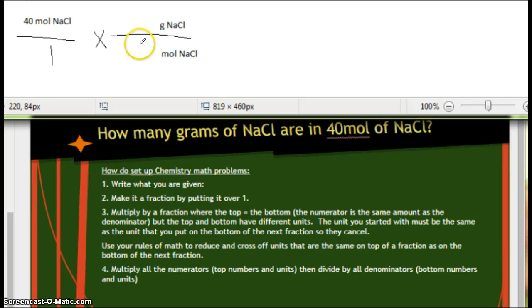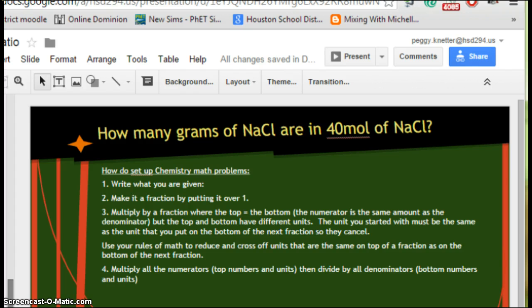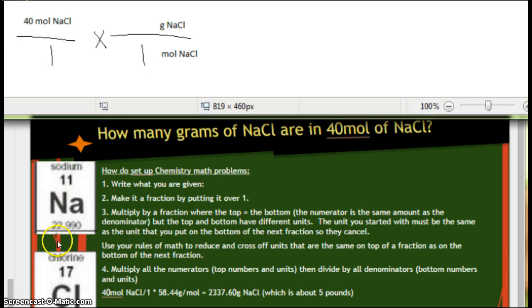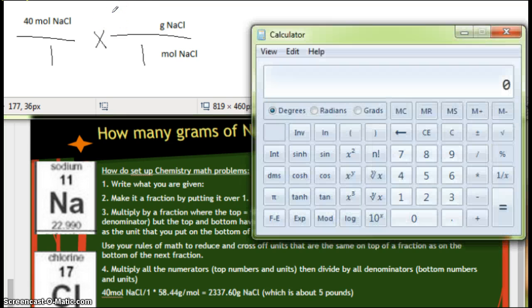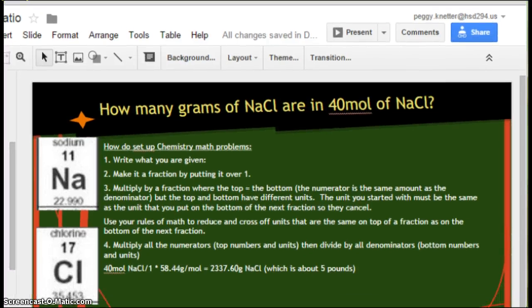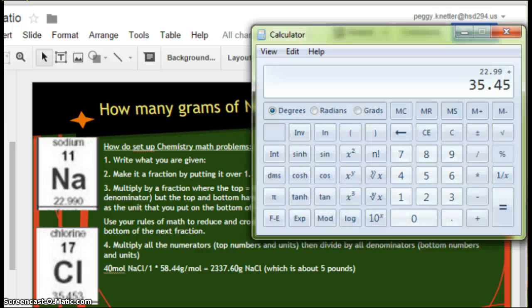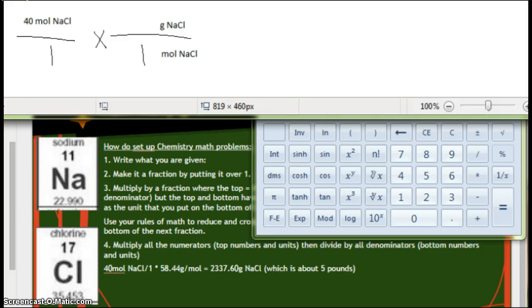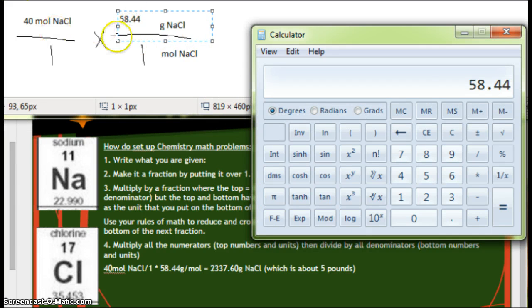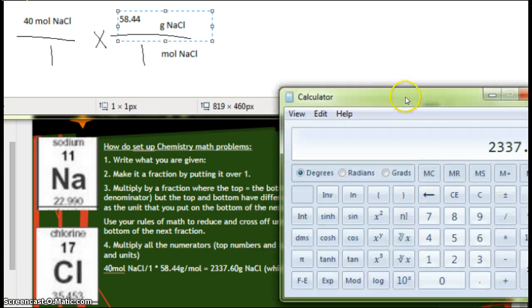And what are we converting to? We want grams of NaCl. So in every one mole of NaCl, how many grams does that equal? Well, now we look on our periodic table. And each sodium, if we round to hundredths, is 22.99, and each chlorine is 35.45. So we're going to put that in our calculator. 58.44 is the molar mass of sodium chloride. So 58.44 times 40 equals 2,337.6.